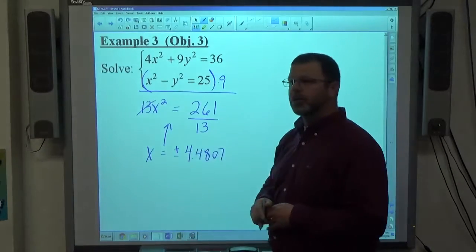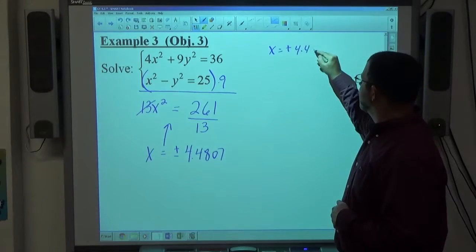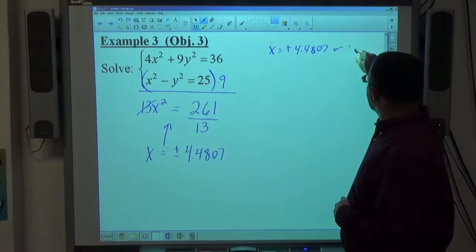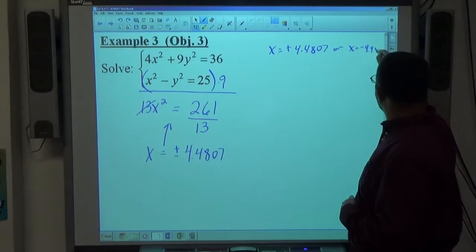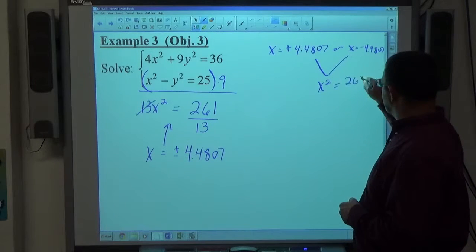Whether I'm testing x equals positive 4.4807 or x equals negative 4.4807, x squared equals 261 over 13.